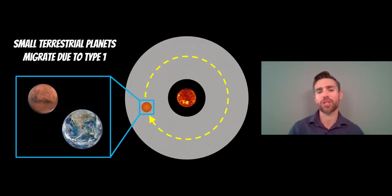Type 1 concerns small terrestrial planets and they will migrate in the disk due to type 1. So these are small planets, a bit like Earth, Mars, I've given an example there, that sort of size. As they're growing, they're going to get to a point where they're no longer type 1 migration, but it's typically smaller terrestrial planets for type 1.